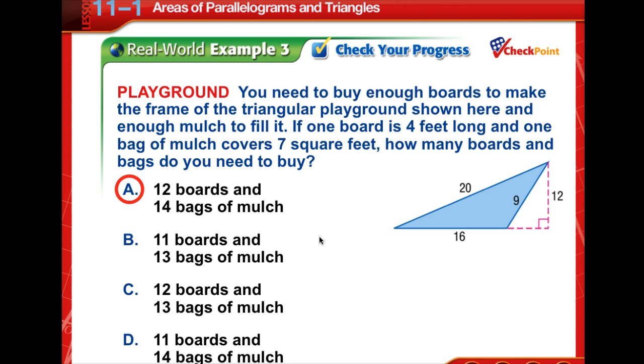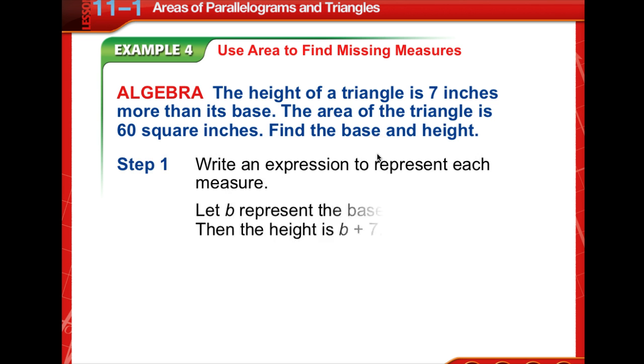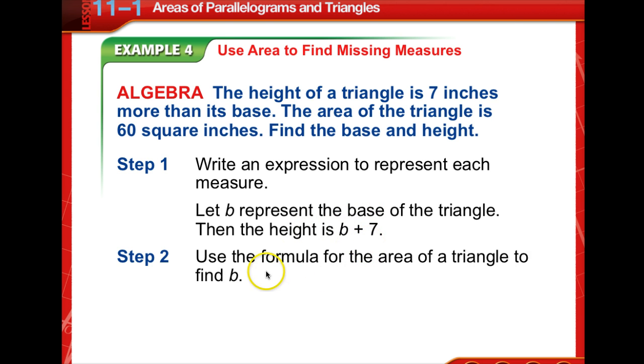Now you can use algebra to solve for unknown measures in parallelograms and triangles. We're given that the height of a triangle is 7 inches more than its base. The area of the triangle is 60 square inches. Find the base and height. So first of all, let's write an expression to represent each measure. If we let B stand for the base, we know the height is 7 more than the base.